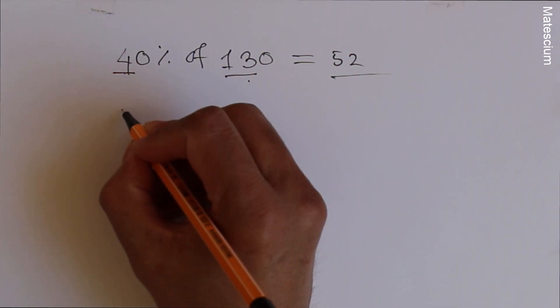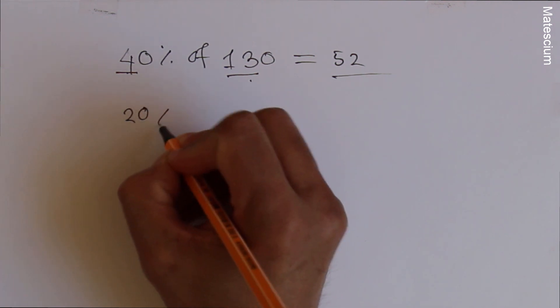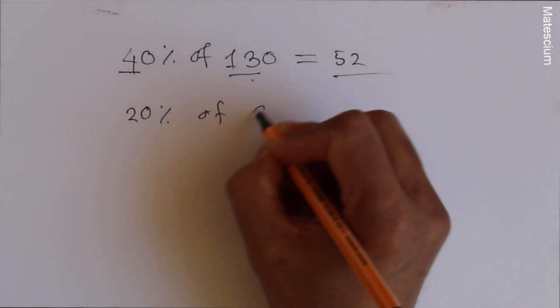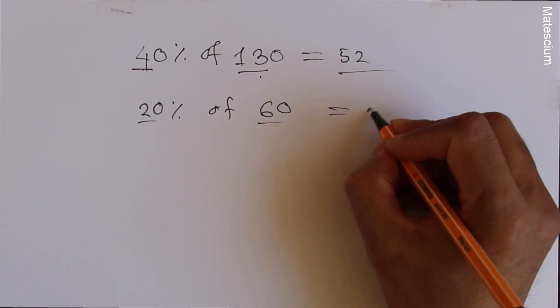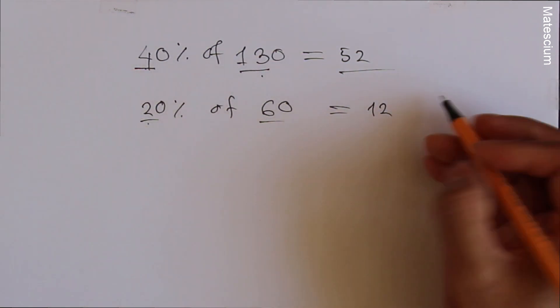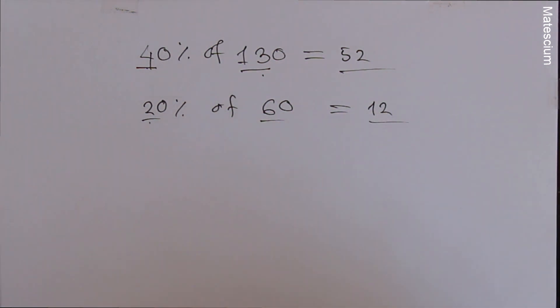Let's do practice more. Let's say 20% of 60. Multiply this 2 by 6. That means 12. That means 20% of 60 is 12. Very simple, right?